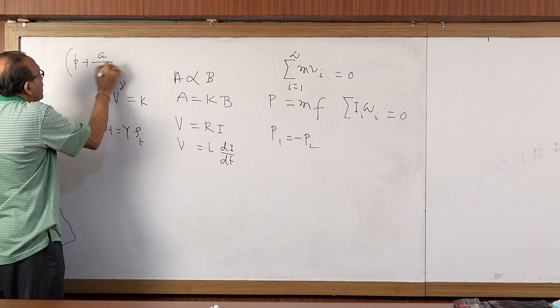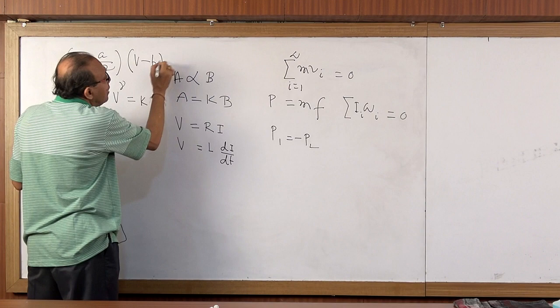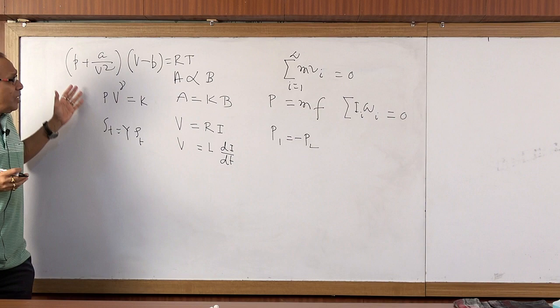Now, go to Van der Waals, put P equal to A by V square, V minus B, K equal to RT, and B equal to 1. It is simple Van der Waals equation.